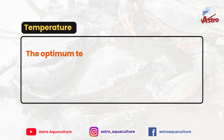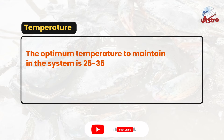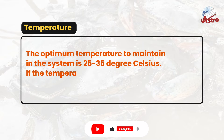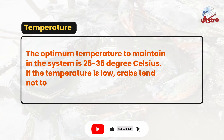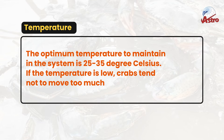The optimum temperature to maintain in the system is 25 to 35 degrees Celsius. If the temperature is low, crabs tend not to move too much in the box.